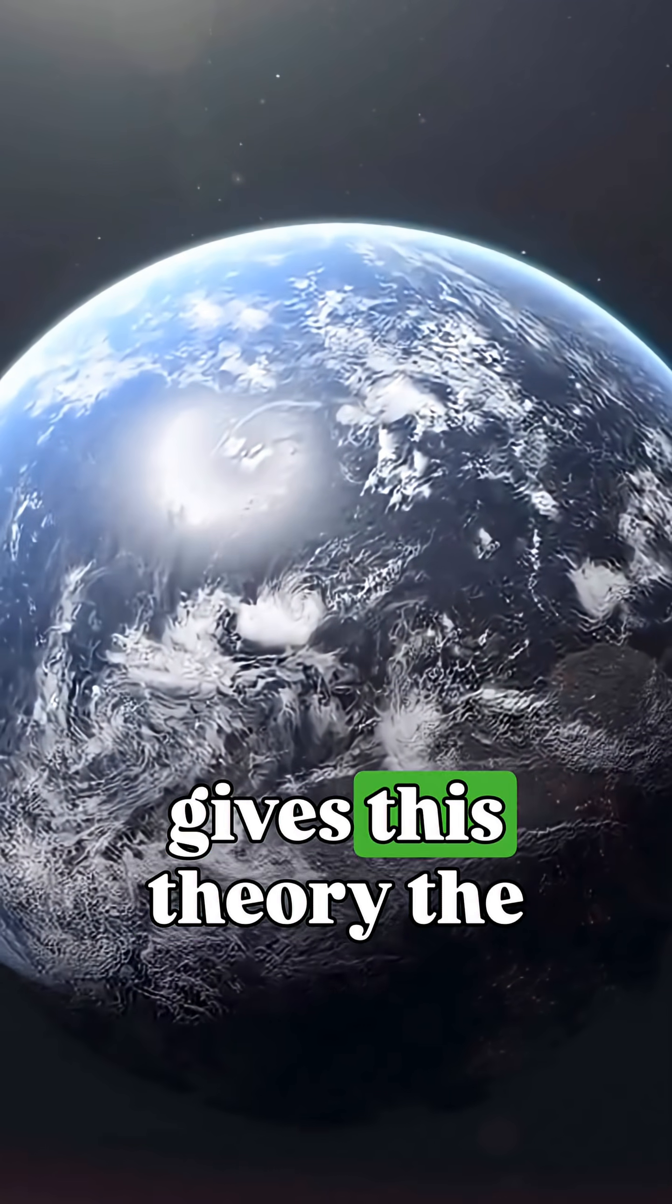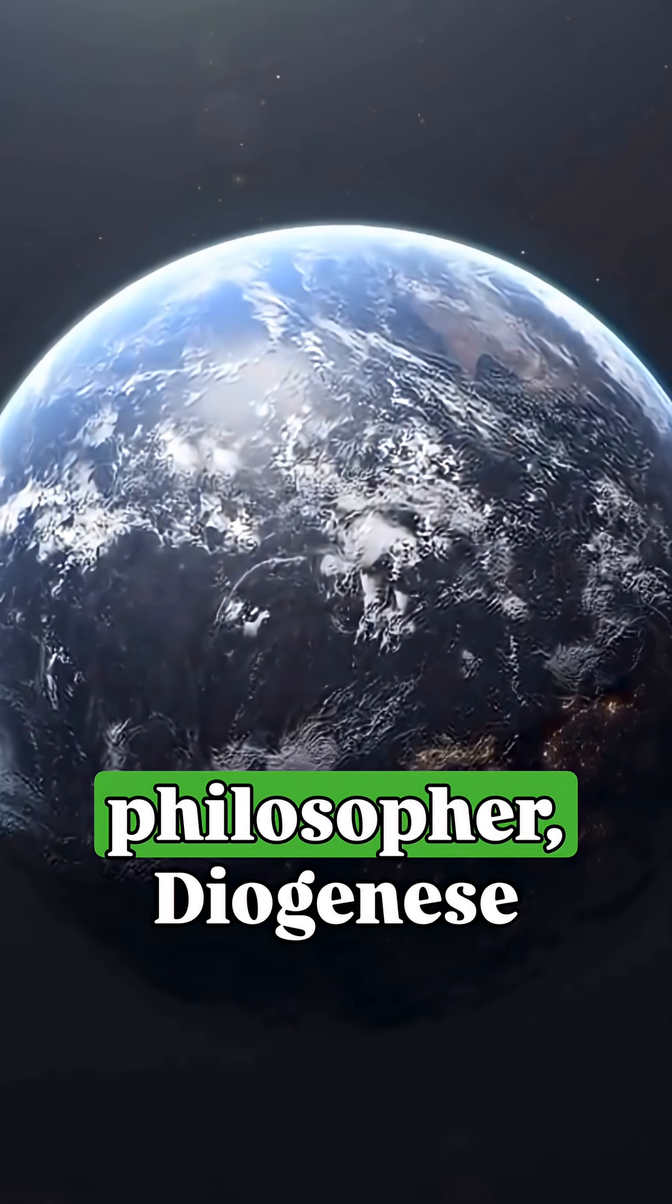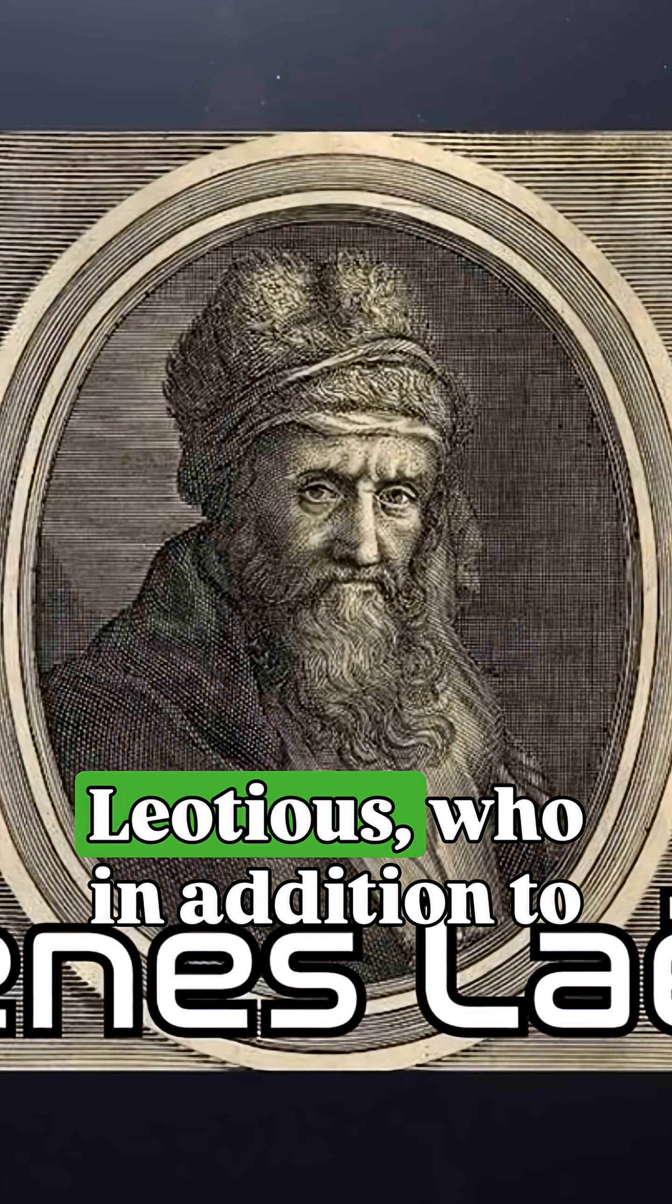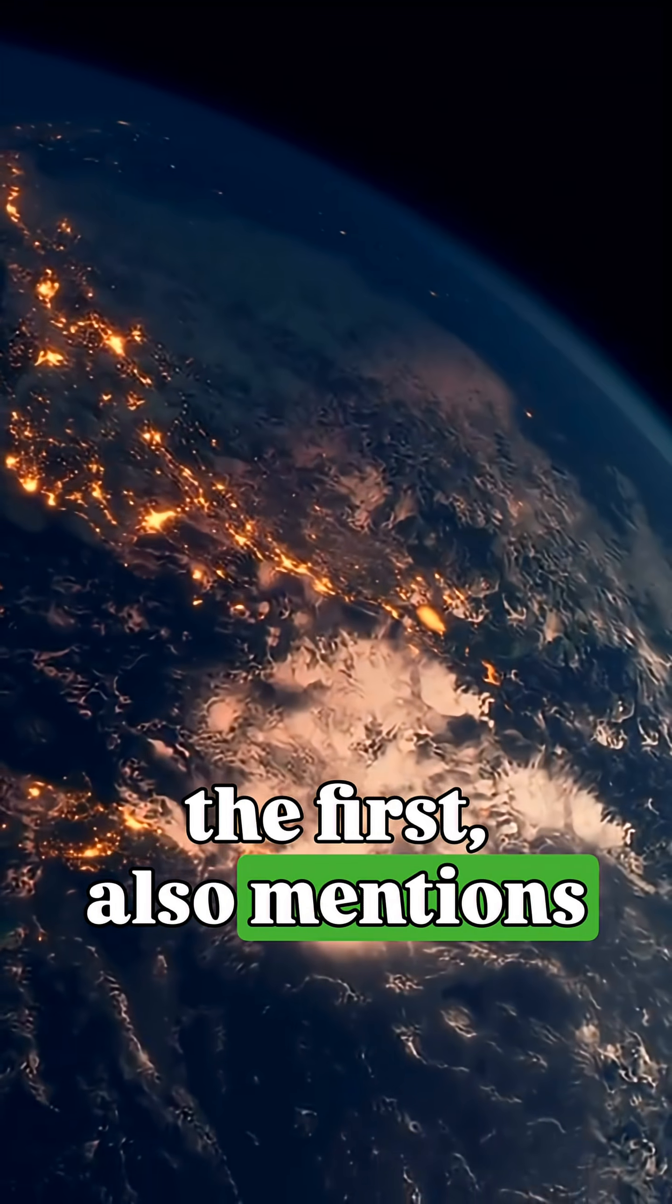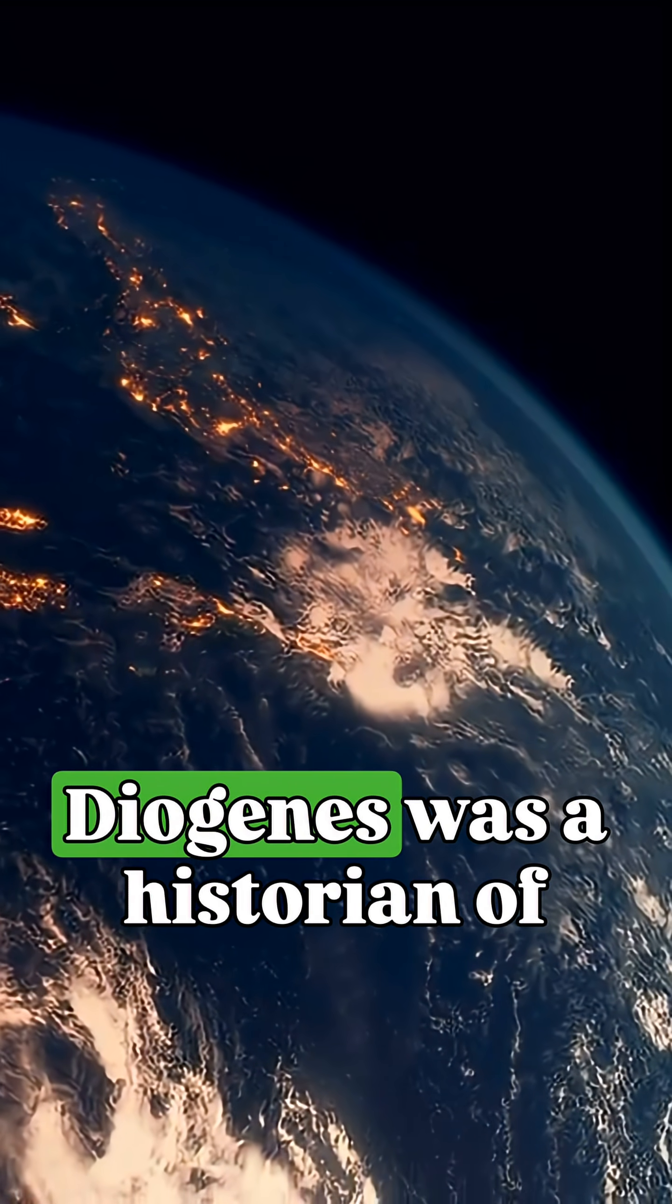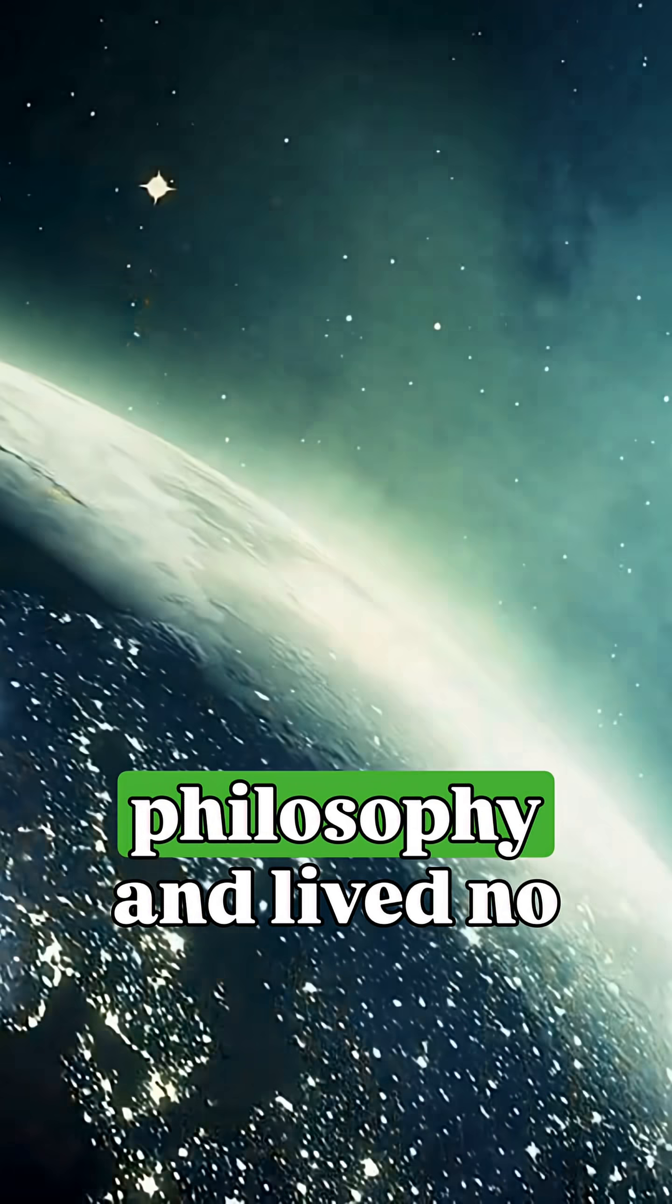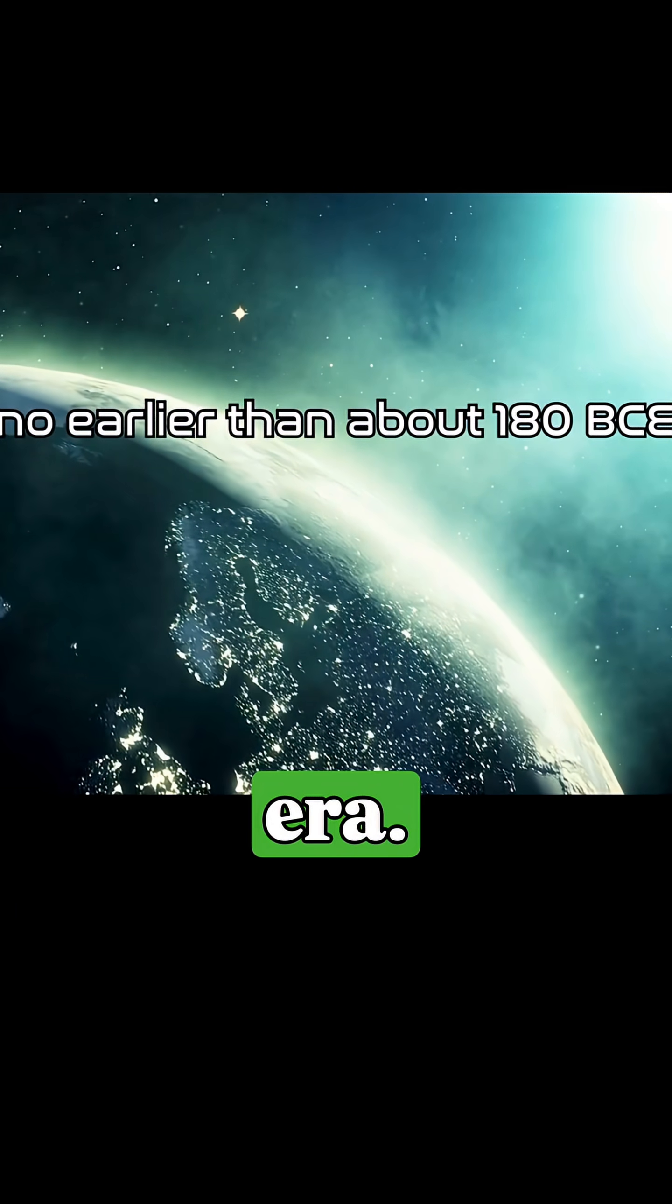The only thing that really gives this theory the right to exist is the work of another well-known philosopher, Diogenes Laertius, who, in addition to naming Pythagoras as the first, also mentions three other figures who said that the earth is actually round. Diogenes was a historian of philosophy and lived no earlier than about 180 years before the Common Era.